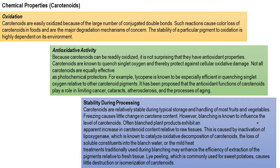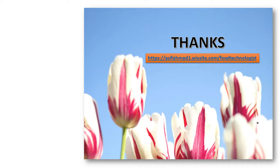Regarding stability during processing: carotenoids are relatively stable during typical storage and handling of most fruits and vegetables. Freezing causes little change in carotenoid content. However, blanching is known to influence carotenoid levels — blanched plant products often exhibit an apparent increase in carotenoid content. This is caused by inactivation of the lipoxygenase enzyme, which catalyzes oxidative decomposition of carotenoids. Also, mild heat treatment during blanching may enhance extraction efficiency of these pigments. Some techniques such as lye peeling, commonly used for sweet potatoes, cause little destruction or isomerization of the carotenoids.